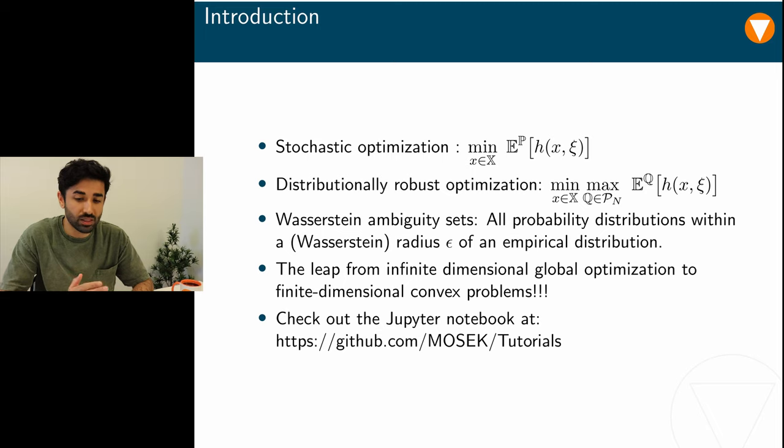DRO programs show better out-of-sample performance compared to stochastic programs, and they might even be tractable when their stochastic counterparts are not. Naturally, a crucial consideration in DRO programs is the choice of the ambiguity set. The set must be inclusive enough that it includes the true underlying probability distribution, but it should be selective enough that it excludes any pathological distributions that might affect the optimum in an adverse way.